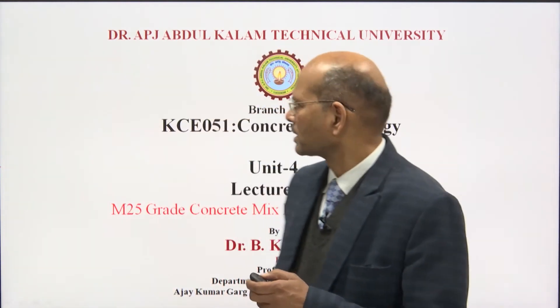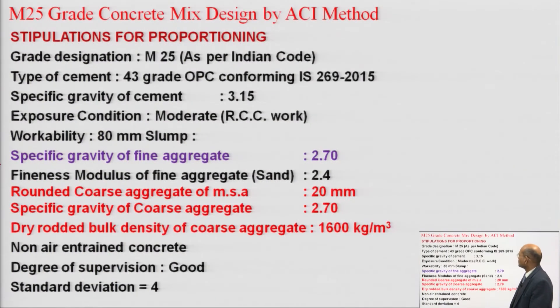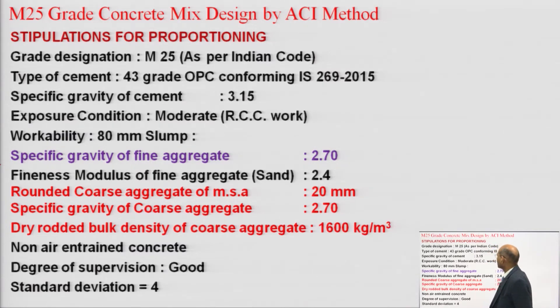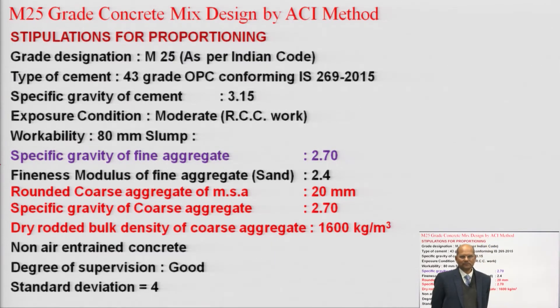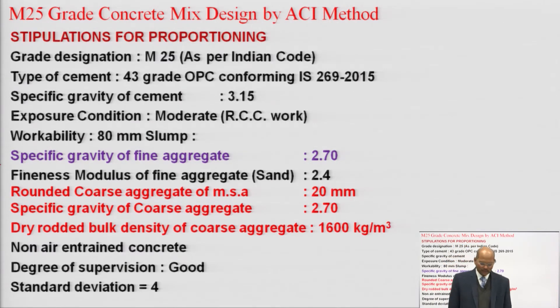Here I have taken an M25 grade of concrete. If you see what data is required, you have to consider the stipulations. Generally we need a grade designation M25. As per Indian code, because ACI code specification is different — they consider tests on cylinder, but we do tests on cube. Our test cube size is 150mm × 150mm × 150mm, and they work on a cylinder of diameter 150mm and height 300mm.